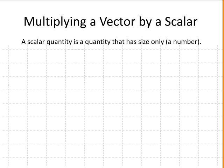A vector can be multiplied by a scalar. A scalar quantity is a quantity that has magnitude, or size only. Therefore it is just a number.